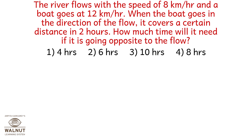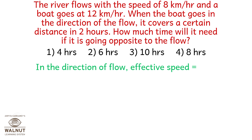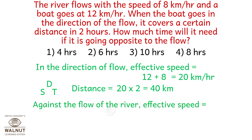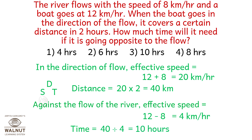The river flows at 8 kilometers per hour and a boat goes at 12 kilometers per hour. When the boat goes in the direction of the flow, it covers a certain distance in 2 hours. How much time will it need going opposite to the flow? In the direction of the flow, the effective speed is 12 plus 8 which is 20 kilometers per hour. Distance is 20 into 2, which is 40 kilometers. Against the flow, the effective speed is 12 minus 8, which is 4 kilometers per hour. Time taken is 40 upon 4, which is 10 hours — option number 3.